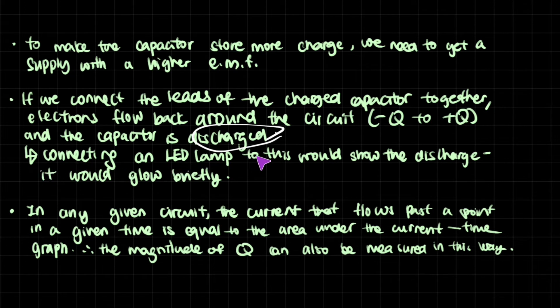Now, connecting an LED lamp to this would show the discharge. It would glow briefly. And this shows that the charges are actually flowing. There's an actual current within that circuit.